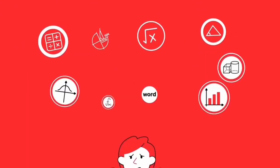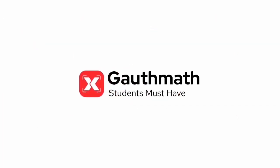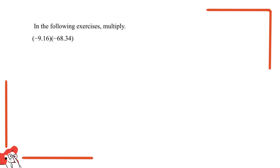Welcome to the Goth Math class — let's make math so easy! Hello everyone, I'm your teacher for this question. The question says: in the following exercises, multiply. We're multiplying negative 9.16 times negative 68.34, so we're multiplying these two numbers.